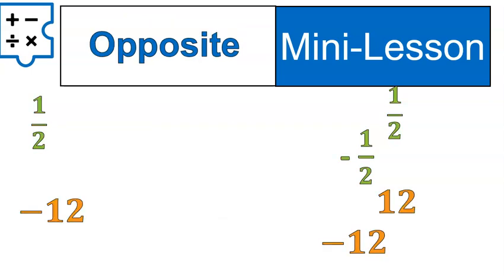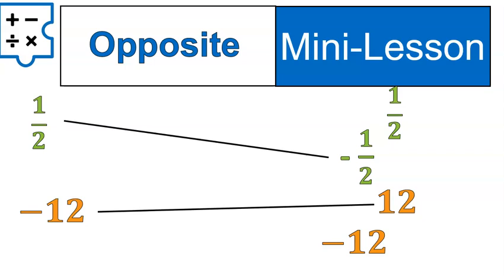Now let's look at opposites. What's the opposite of one half and what's the opposite of negative 12? The opposite is just changing the sign. If I start with positive one half and I'm asking for the opposite, it's going to be negative one half. If I start with a negative, the opposite will be a positive.